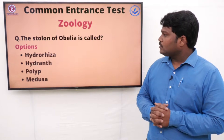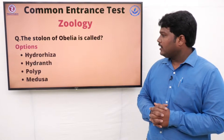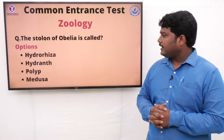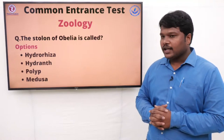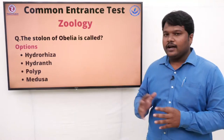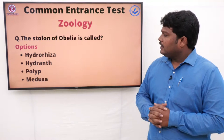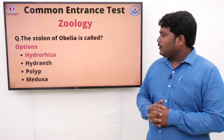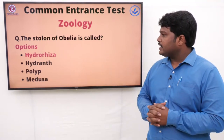Question 15: The stolon of Obelia is called. Options: A) Hydrorhiza, B) Hydranth, C) Polyp, D) Medusa. The right answer is Hydrorhiza.